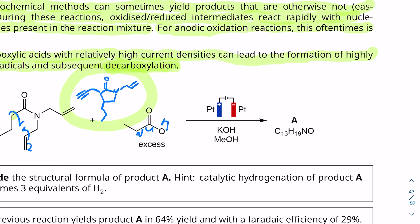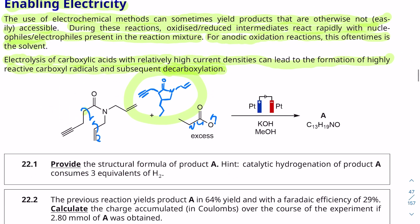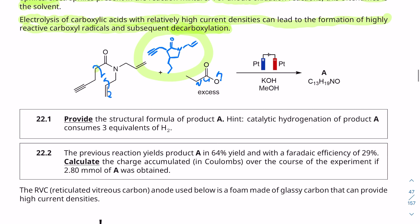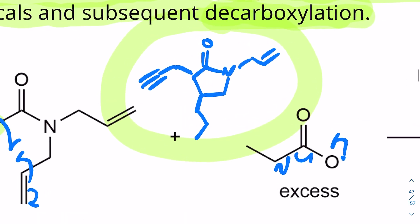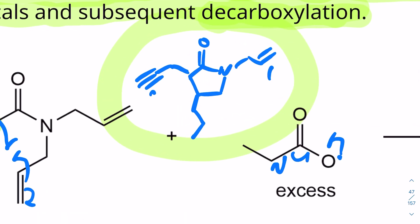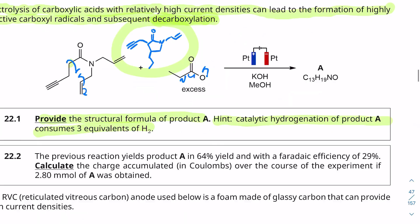This was a pretty hard question. I'm not a fan of it because I don't feel like it gives you enough information to unambiguously figure out what the result is. But it is what it is — it's still a question we have to solve. So question 22.1 asks to provide the structural formula for A. The hint is that catalytic hydrogenation of product A consumes three equivalents of hydrogen. This alkyne uses one equivalent, and the two alkenes use two equivalents, so we're good.